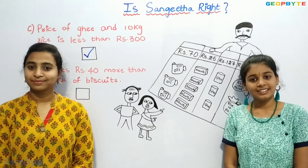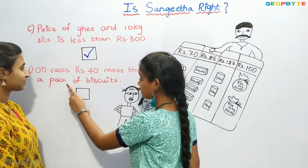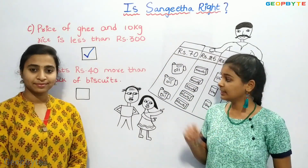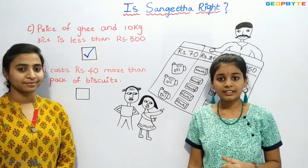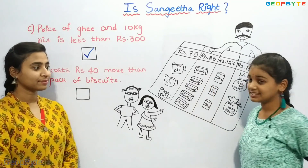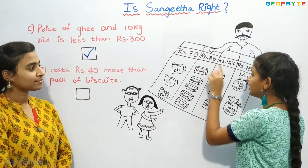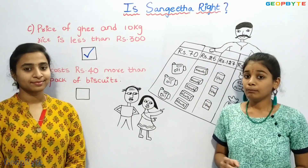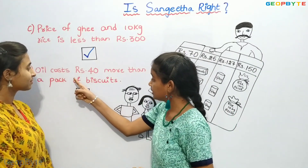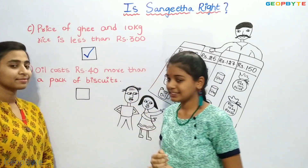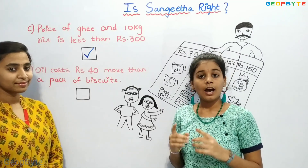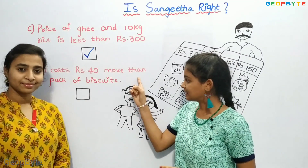Now, let us see part D. Oil costs rupees 40 more than a pack of biscuits. Children, to find whether the given sentence is correct or not, we need to subtract the cost of oil and the cost of biscuits. That is, 70 minus 25, which is 45. The given sentence says oil costs rupees 40 more than a pack of biscuits, but the actual answer is oil costs rupees 45 more than a pack of biscuits. So, this sentence is wrong.